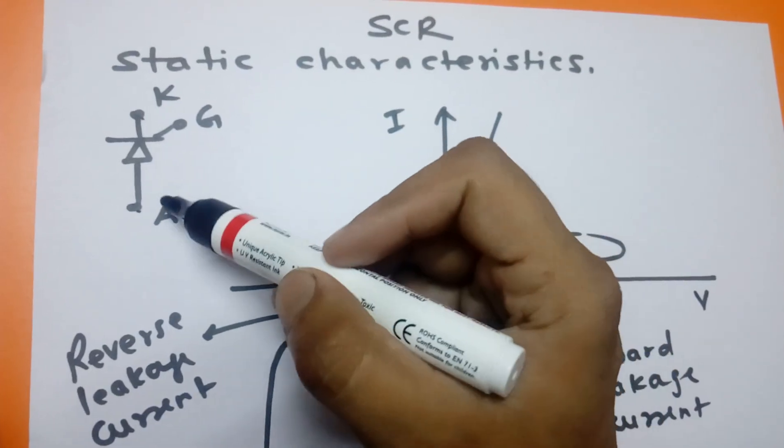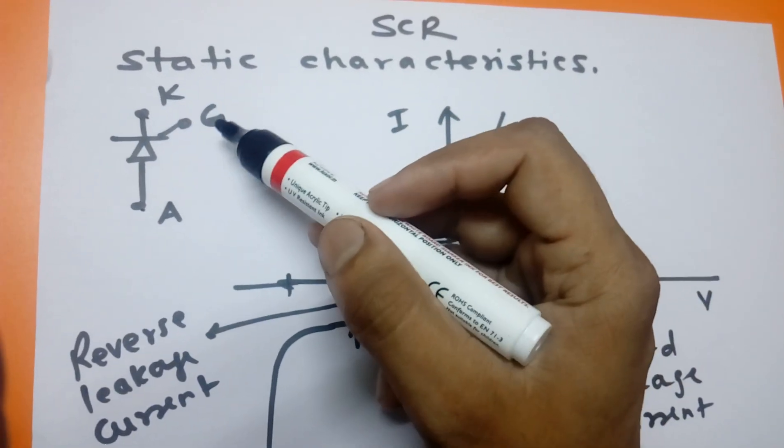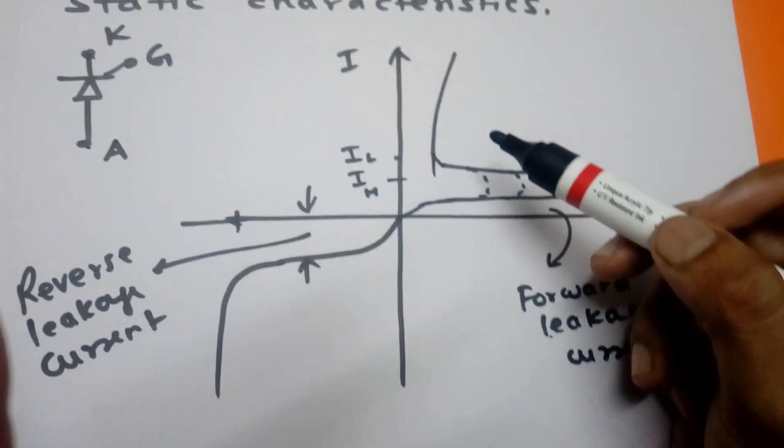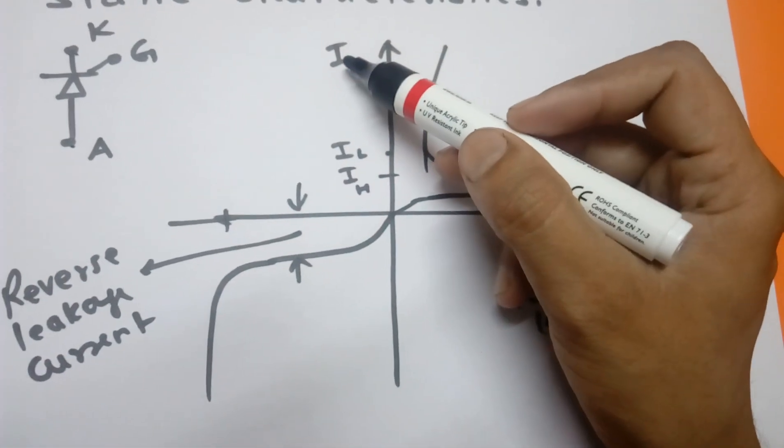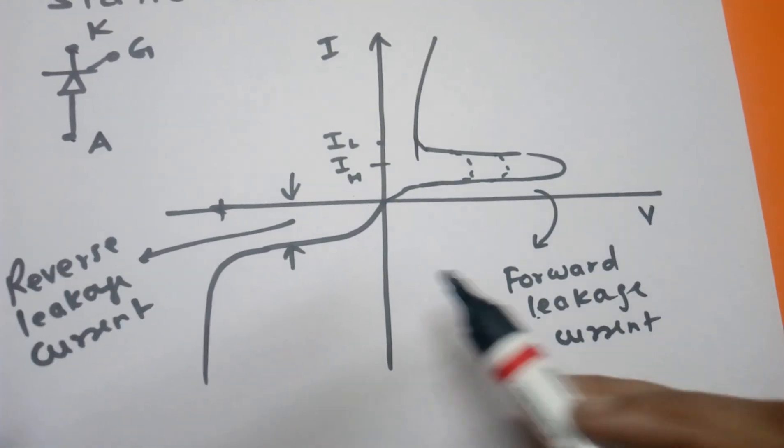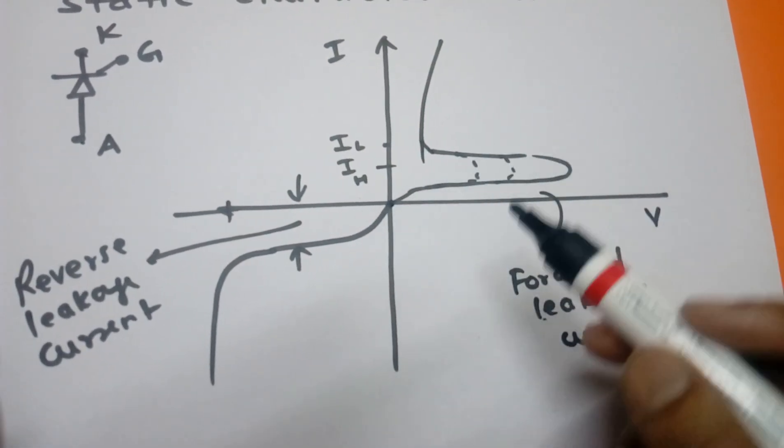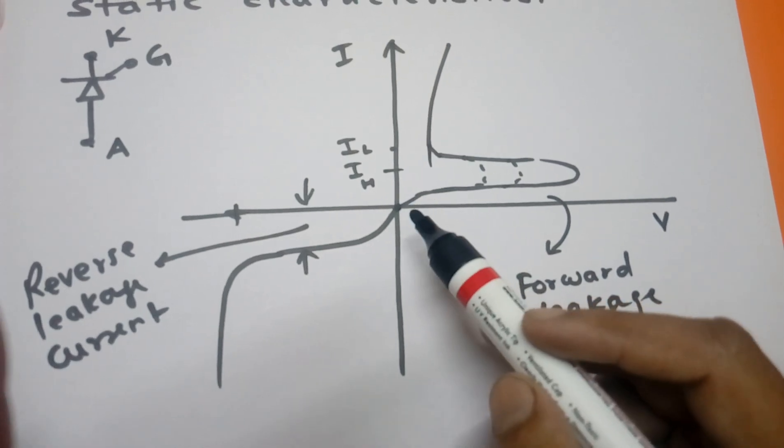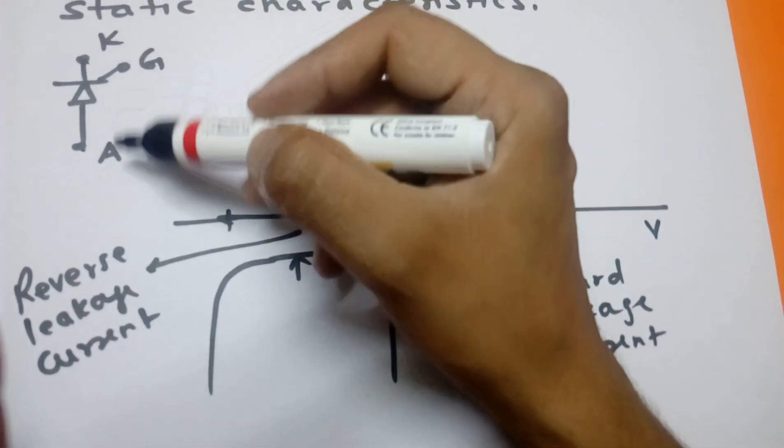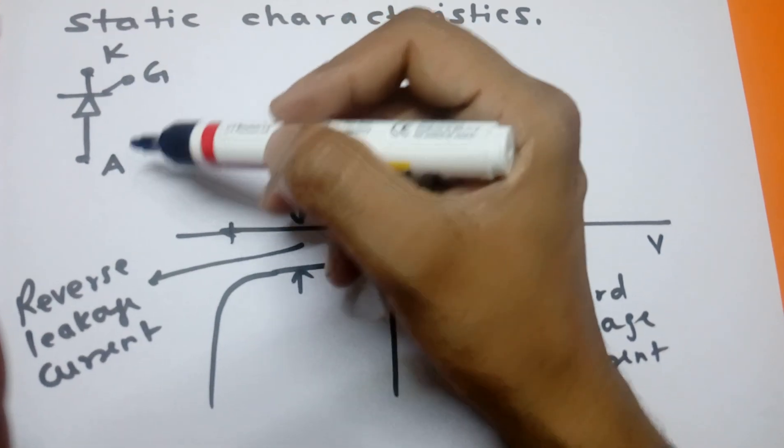This characteristic shows current on the y-axis and voltage on the x-axis. Here we can see the origin point. When the anode is positive and cathode is negative, this is the forward blocking mode.